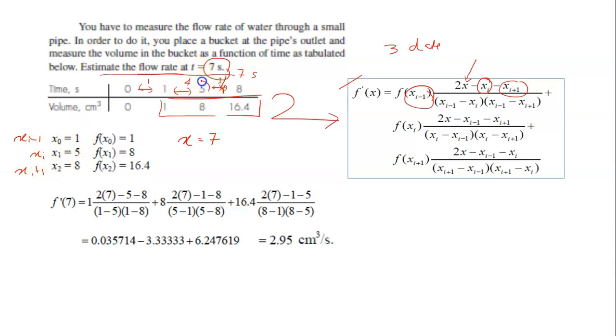Okay, so 5 here, we take it as xi. xi minus 1 is the one before the xi, which is 1. And xi plus 1 is the one after the xi, which is 8. So now you have identified all the data here.